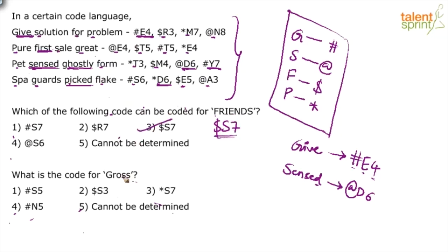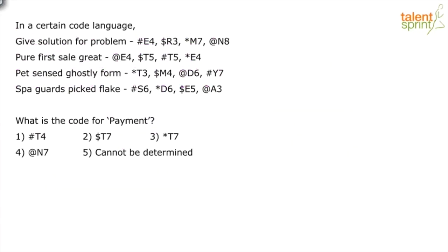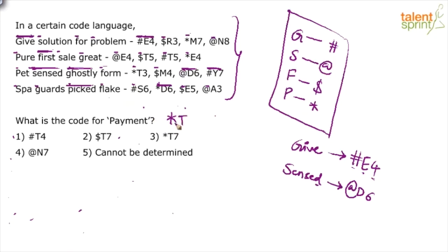And the last question: what is the code for 'payment'? P is coded as *. Last letter is T. Count of letters is 7. So the code is *T7. Option 3 is the answer.